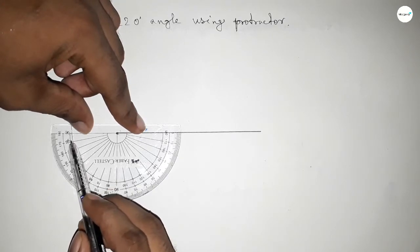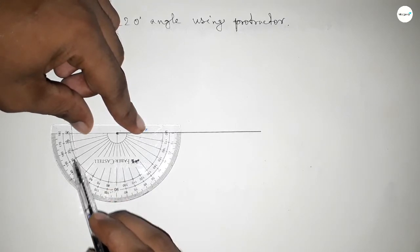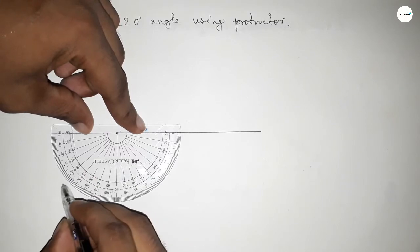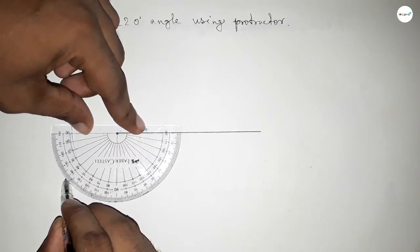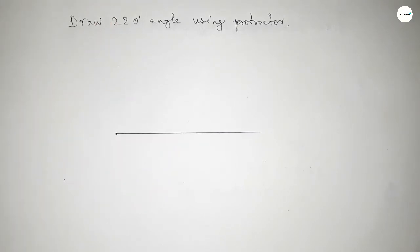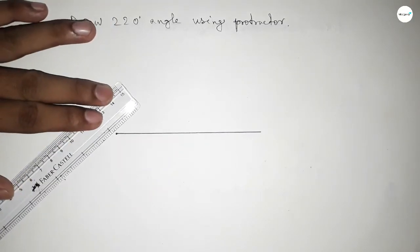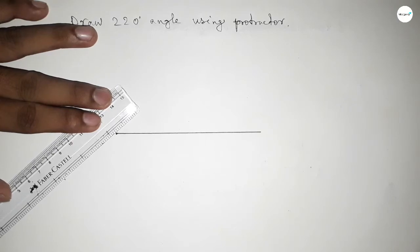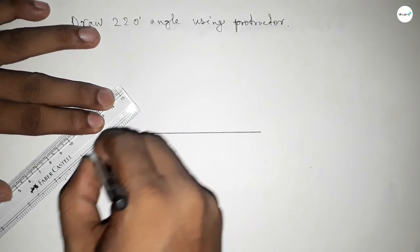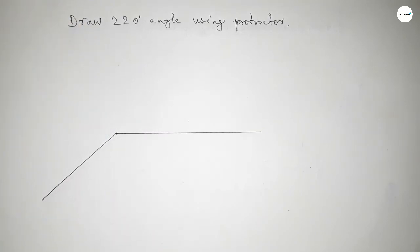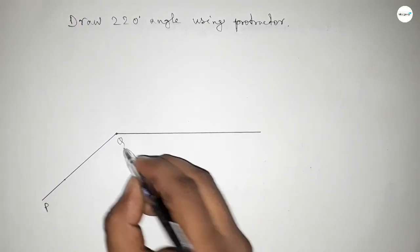This is 0, 10, 20, 30, and this is 40. So by adding 40 with 180 degrees we can get 220 degrees. Now joining this to get a 220 degree angle. So we got a 220 degree angle.